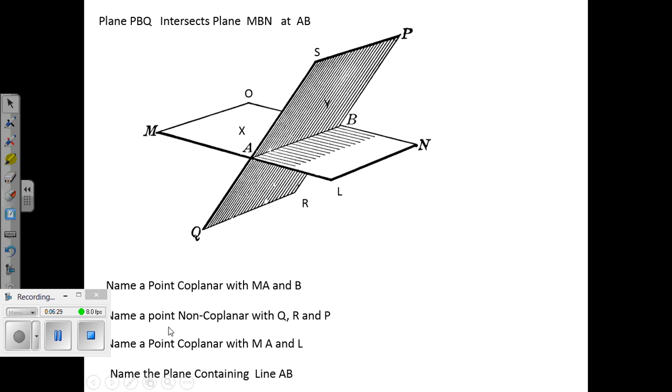Name a non-coplanar point with Q, R, and P. Q, R, and P is this shaded plane. And a point non-coplanar with that would be anything on the unshaded plane: M, O, L, N.